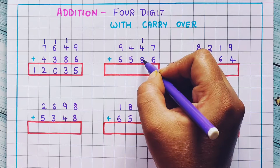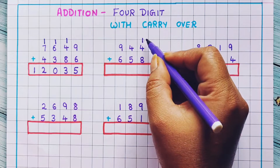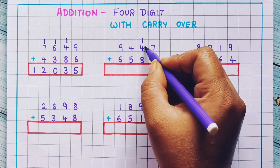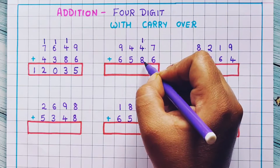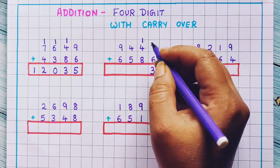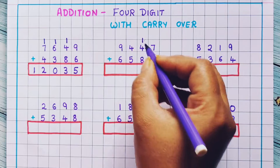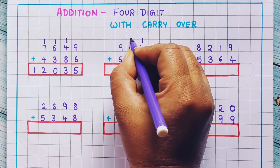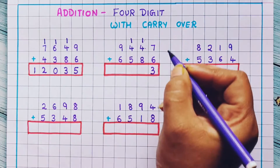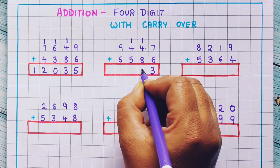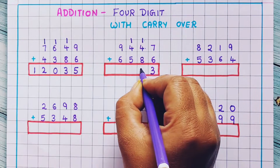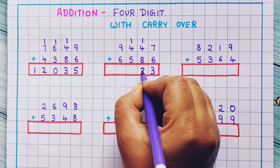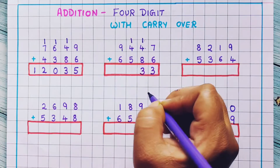Now 1 plus 4 plus 8. So this is 5 plus 8, which is 13. So 1 I will write here as carryover and 3 I will write here.